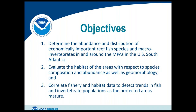We had three overall objectives: to determine the abundance and distribution of economically important reef fish species and macroinvertebrates; to evaluate the habitat of the MPAs with respect to species composition, abundance, and geomorphology; and to correlate the fishery and habitat data to detect trends in fish and invertebrate populations over time.